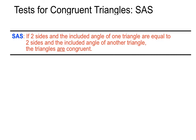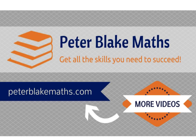So that's SAS: if two sides and the included angle of one triangle are equal to two sides and the included angle of another triangle, the triangles are congruent. It's a bit of a mouthful, but it panned out quite nicely just by listing enough information to pass the test. Thanks for listening. PeterBlakeMaths.com. See you next time.